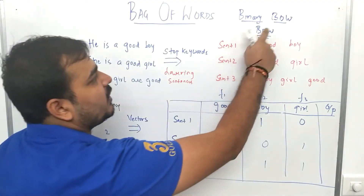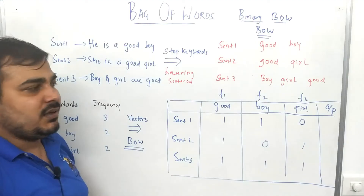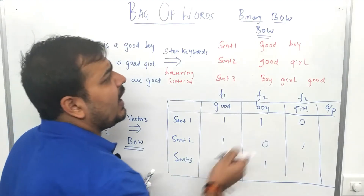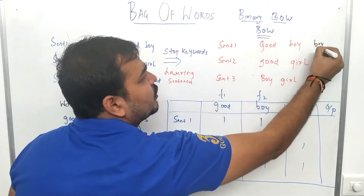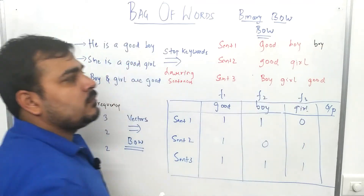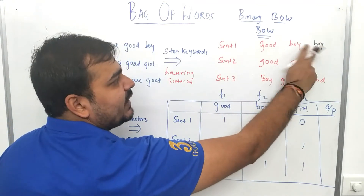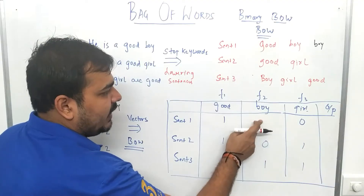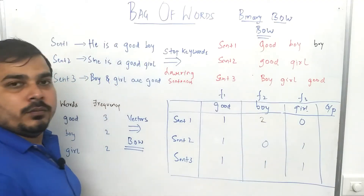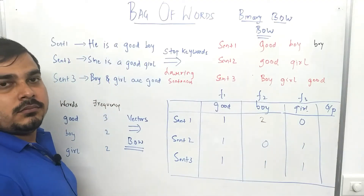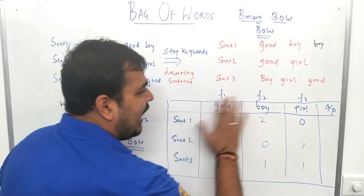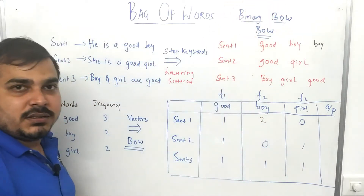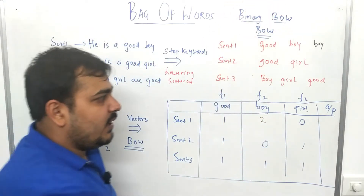Now, the second type is normal Bag of Words. Suppose a sentence has 'good boy' and 'boy' appears again — 'boy' is repeated two times. In normal Bag of Words, instead of just 1, I increment the count and make it 2. This is the key difference — normal Bag of Words uses actual word counts rather than just binary presence or absence.